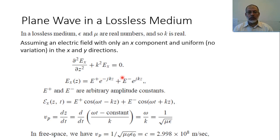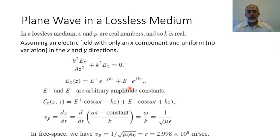The second solution is e to the power plus-jkz. Differentiating once gives jk times the exponential, and differentiating again gives jk squared, which equals minus k-squared. So plus k-squared Ex gives zero, confirming this also satisfies the equation. E-plus and E-minus are constant amplitudes, and the general solution is Ex(z) equals E-plus times e to the power minus-jkz, plus E-minus times e to the power plus-jkz.